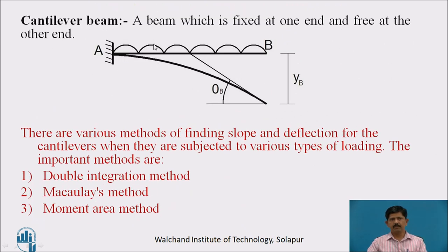A cantilever beam is a beam which is fixed at one end and free at the other end — one end is fixed and the other end is free.